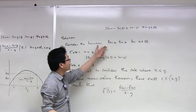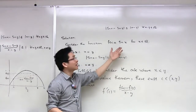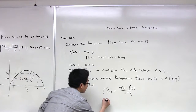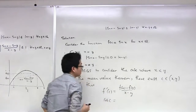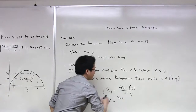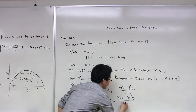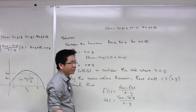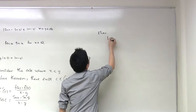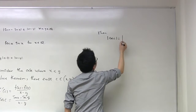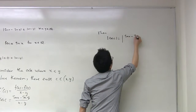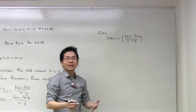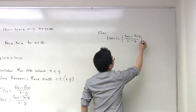As you know, for this function the derivative is f'(x) = cos(x). Therefore, replacing everything in, we get that cosine of c is equal to sine(x) minus sine(y) over x minus y. Now if we take the absolute value of both sides, the absolute value of cosine(c) is equal to the absolute value of sine(x) minus sine(y) over x minus y. And as you know, the absolute value of cosine(c) is always less than or equal to 1, so this is less than or equal to 1.